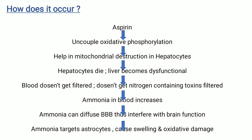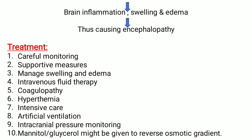How does Reye's syndrome occur? Aspirin acts upon uncoupled oxidative phosphorylation, helping in mitochondrial destruction in hepatocytes — that is, in liver cells, the mitochondria is damaged. Those hepatocytes die, and the liver becomes dysfunctional as we do not get ATP from mitochondria. Thus the blood does not get filtered in the liver, and nitrogen-containing toxins are not filtered. The ammonia in blood increases. Ammonia can diffuse across the blood-brain barrier, thus interfering with brain function. Ammonia targets astrocytes in the brain, causing swelling of astrocytes and oxidative damage, thus causing brain inflammation, swelling, and edema — thus causing brain encephalopathy, i.e., brain dysfunction.